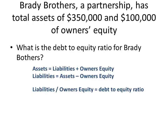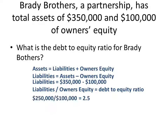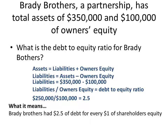Since we don't know the liability, we have to go back to our accounting equation. We know that assets equals liabilities plus owner's equity. We don't know the liabilities, but we do know the assets, so we can subtract owner's equity from assets to get our liabilities. In this case, our liabilities is $250,000 — we take $350,000 of assets less the $100,000 of owner's equity. So our liabilities is $250,000, and we divide that by our owner's equity of $100,000, which gives us 2.5. Brady Brothers has $2.50 of debt for every $1 of shareholders' equity.